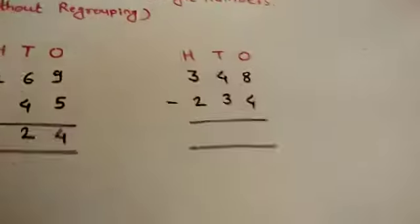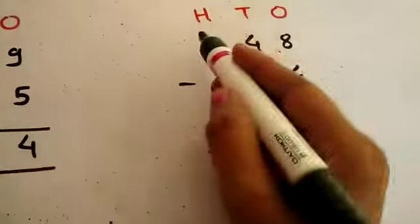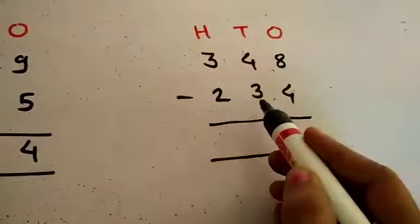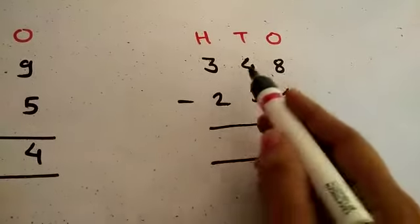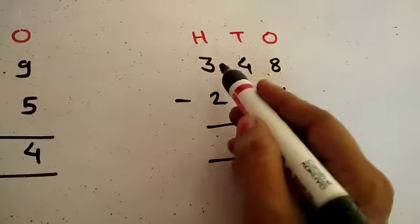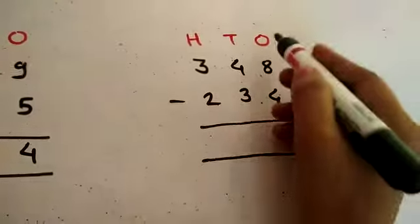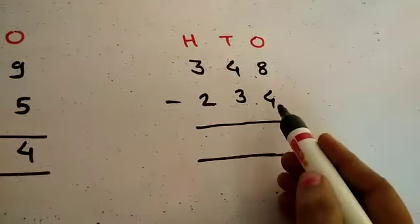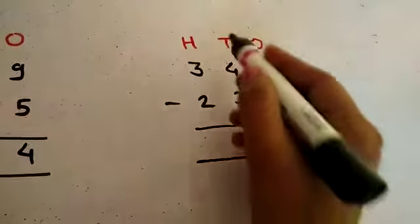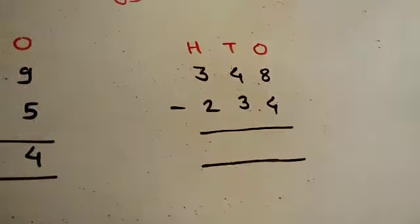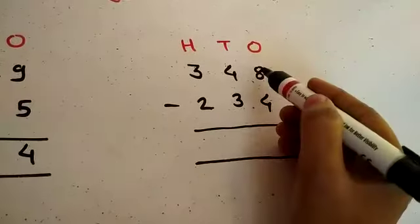Now solve the next example: 348 minus 234. 348 is 3 hundreds, 4 tens, 8 ones. 234 is 2 hundreds, 3 tens, 4 ones. Let's first subtract the ones.